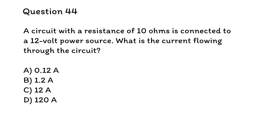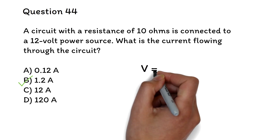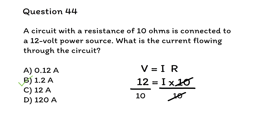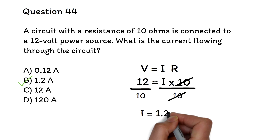Question 44. A circuit with a resistance of 10 ohms is connected to a 12-volt power source. What is the current flowing through the circuit? A. 0.12 amperes. B. 1.2 amperes. C. 12 amperes. D. 120 amperes. The correct answer is B, 1.2 amperes. We use Ohm's law: V equals IR, where V is voltage, I is current, and R is resistance. This formula will be given to you. With voltage as 12 and resistance as 10, we divide both sides by 10. 12 divided by 10 is 1.2, so the current is 1.2 amperes.